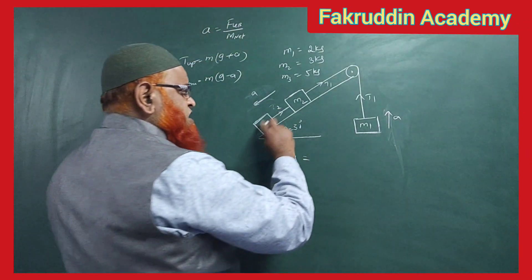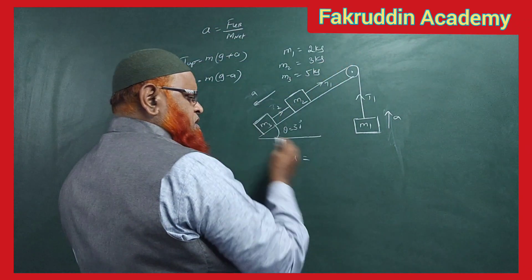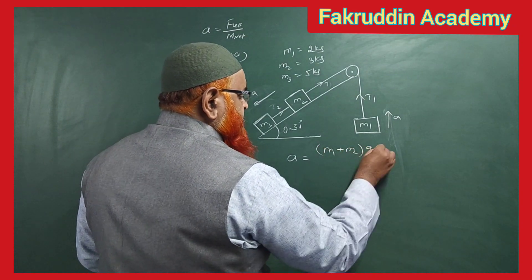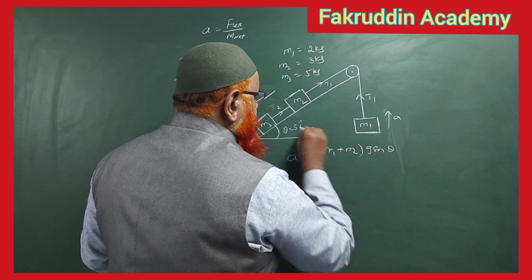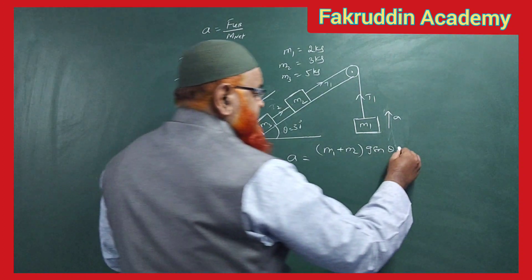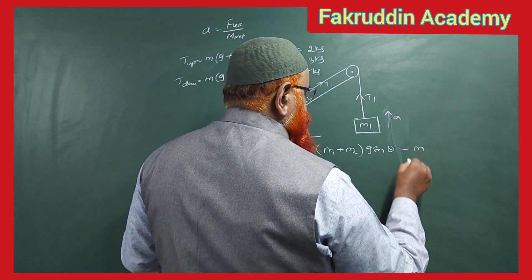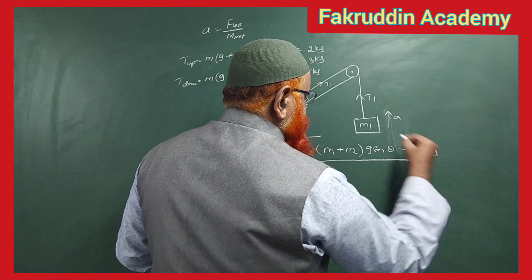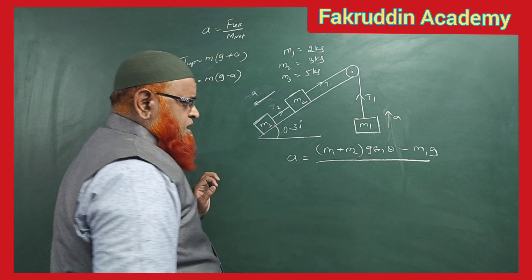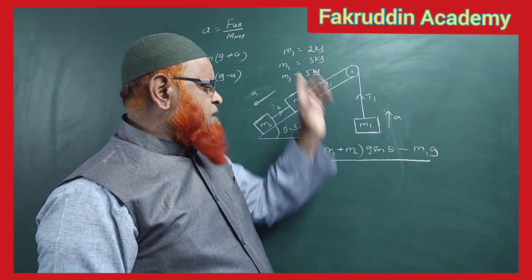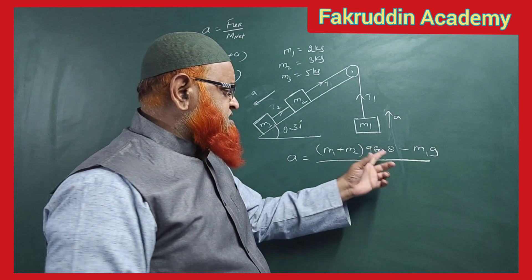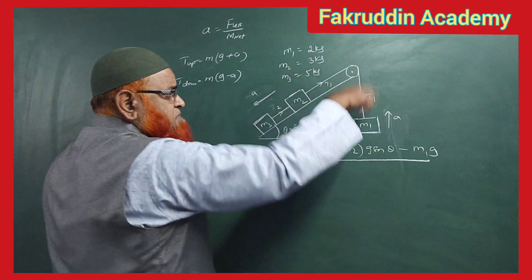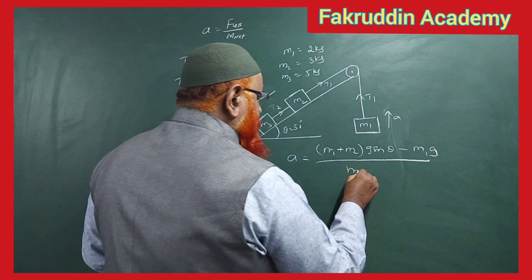Acceleration equals unbalanced force by net mass. The two inclined blocks come downward: (m1+m2)·g·sinθ, and the hanging block moves upward: minus m3·g. Net mass is the sum of all three masses: m1+m2+m3. So a = [(m1+m2)·g·sinθ − m3·g] / (m1+m2+m3).